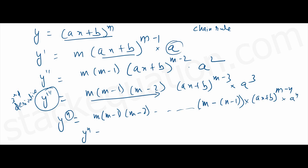Let me write this properly. The nth derivative y_n = m(m-1)(m-2)···(m-n+1)·(ax + b)^(m-n)·a^n.